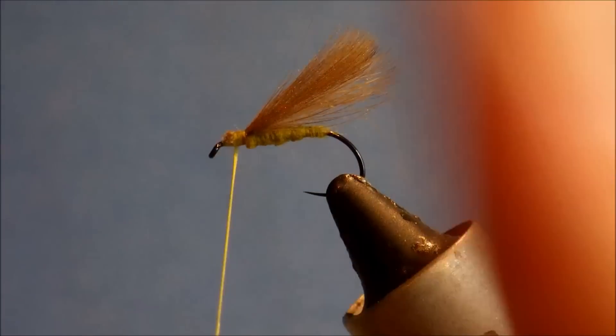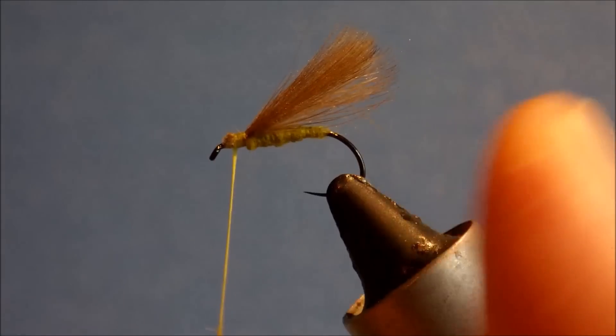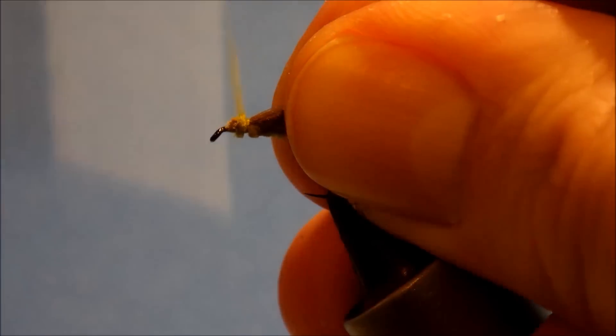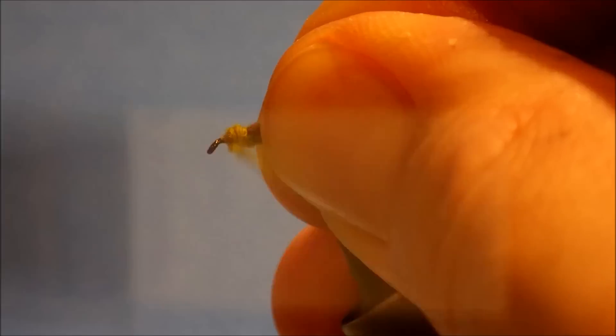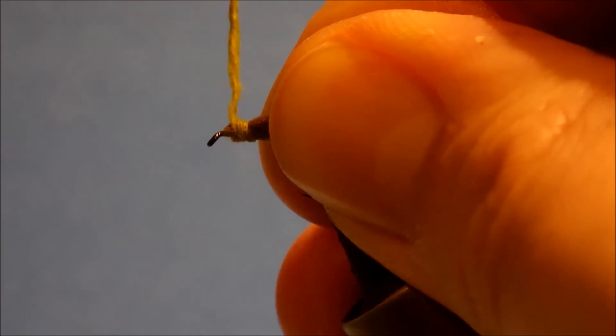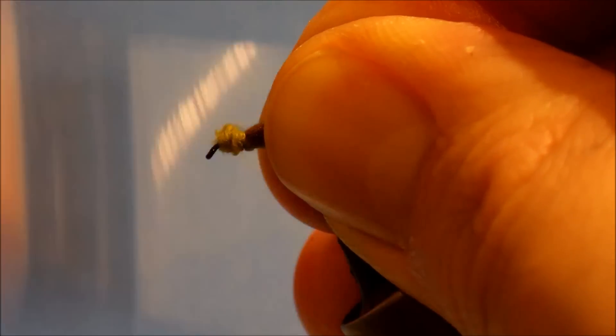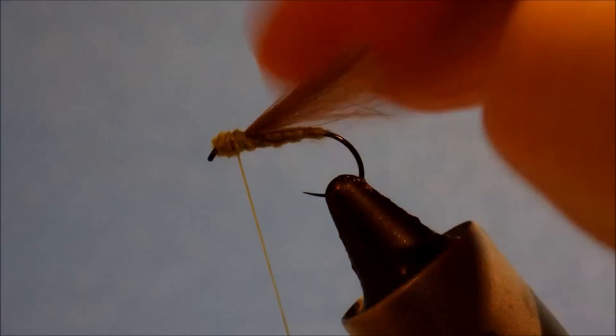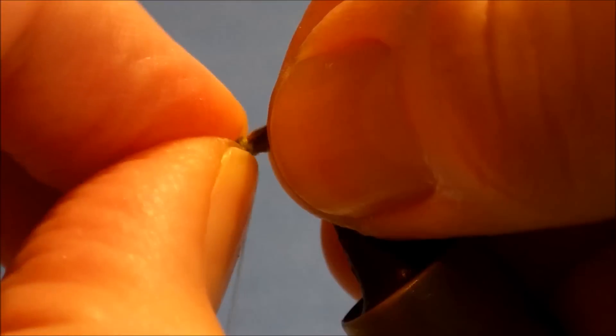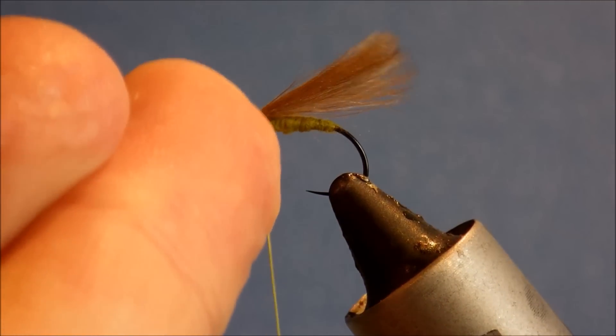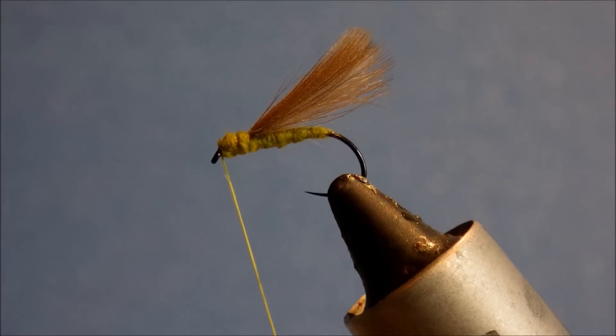Then just to build up the small thorax area, the same dubbing, Super fine dry fly dubbing. Make a nice rope and just take it forward. And you can wind your thread through it just to sort of help get the shape. And then that's it. Nice and simple.